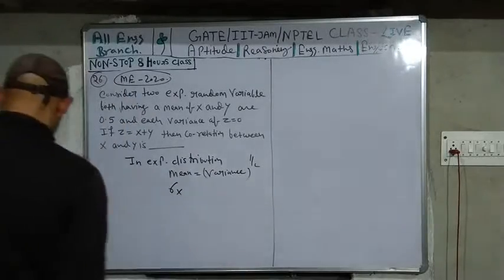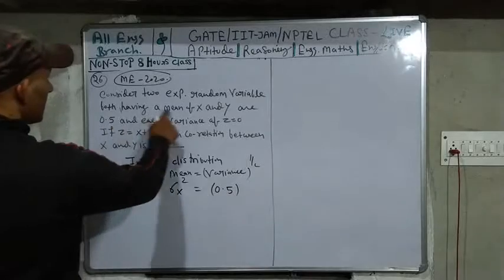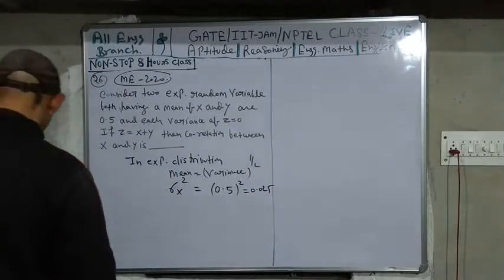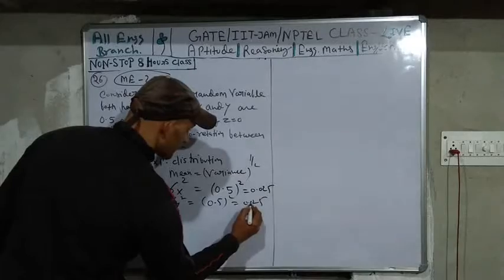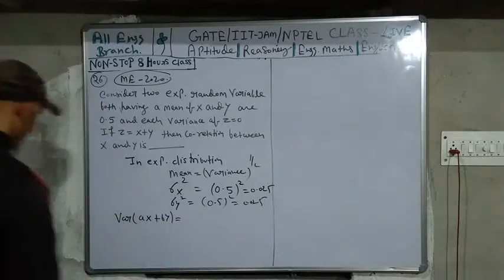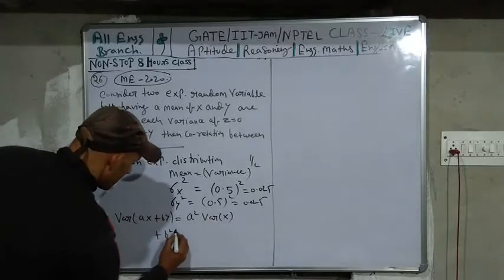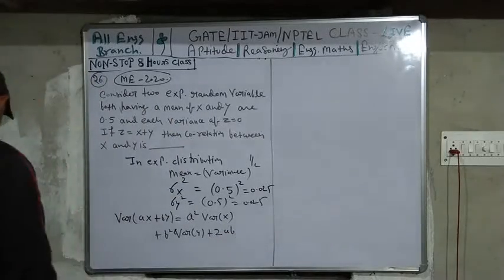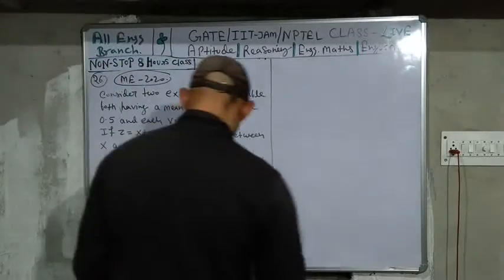Since mean equals variance to the power one-half, we get variance equals mean squared. So sigma_x squared equals 0.5 squared equals 0.025, and similarly sigma_y squared equals 0.025. The key formula for variance of aX plus bY is: variance(aX + bY) = a² · variance(X) + b² · variance(Y) + 2ab · covariance(X, Y).